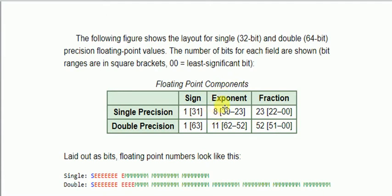So the total bits become 23 plus 8 plus 1 which is equals to 32. So basically single precision floating point numbers has a length of 32 bits.